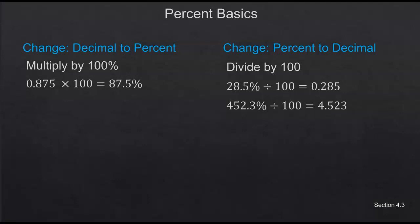To change a decimal to a percent, we basically multiply by 100. The shortcut is that you just move the decimal two places to the right and then put your percent symbol on there. If you're changing something to a percent it has to have that percent symbol — if you leave off the percent it does not mean the same thing. 87.5 percent as a decimal is definitely not the same as 87.5.